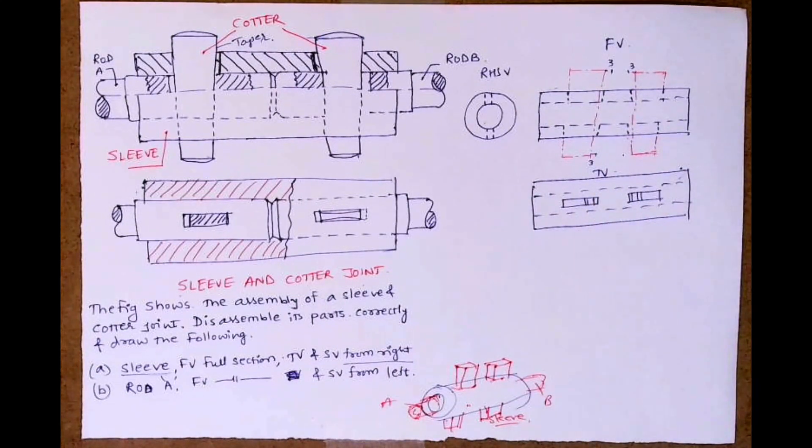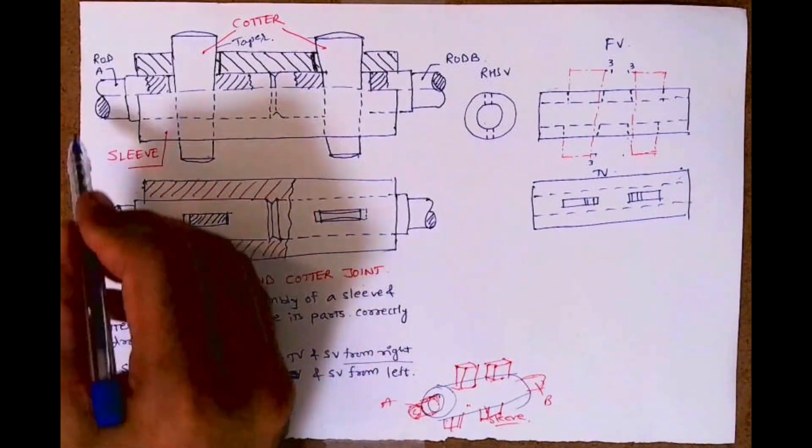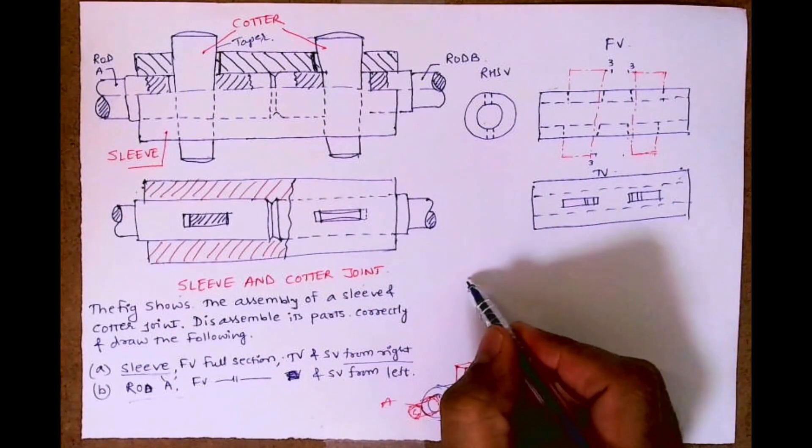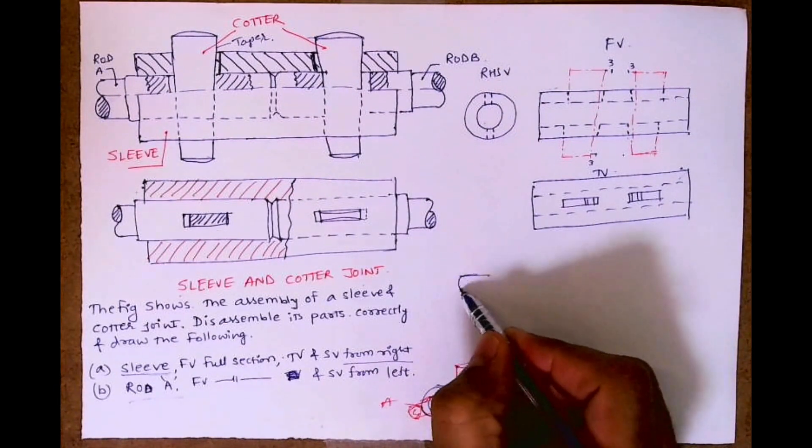So we are done with top view. Now I need to draw rod A.